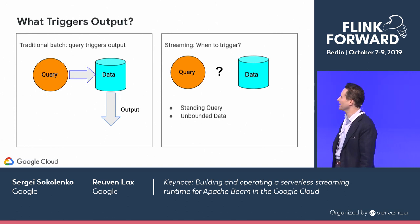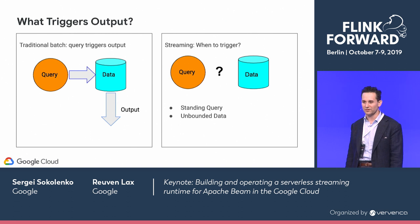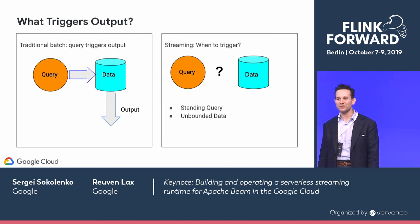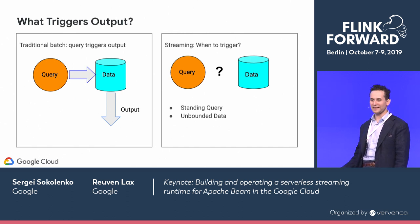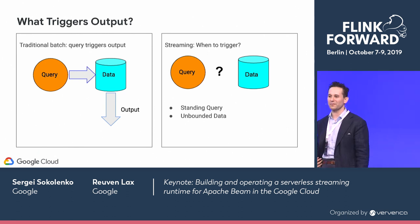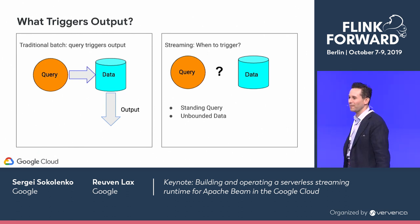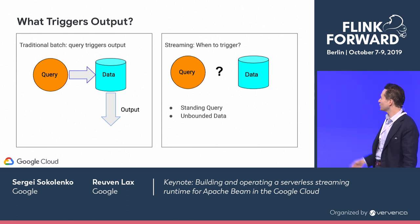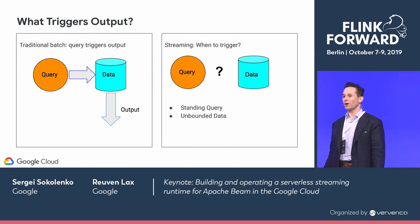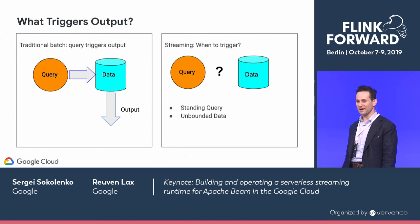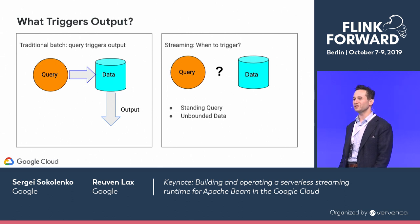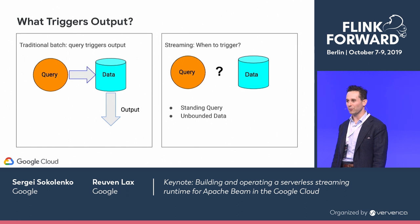For a classic SQL data warehouse, the SQL statement finishing is what triggers output. For a MapReduce or any classic batch job, submitting the batch job is what triggers it. For streaming, you have to figure out when output can come. The job is submitted once and then keeps running — the input data never ends. So you need to answer the question of when to emit output from your pipeline.